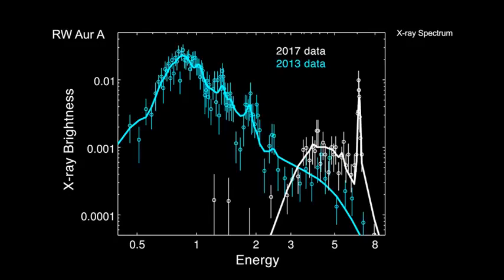The team found that the dips in both optical and X-ray light are caused by dense gas obscuring the star's light. The observation in 2017 showed strong emission from iron atoms, indicating that the disk contained at least ten times more iron than in the 2013 observation during a bright period.